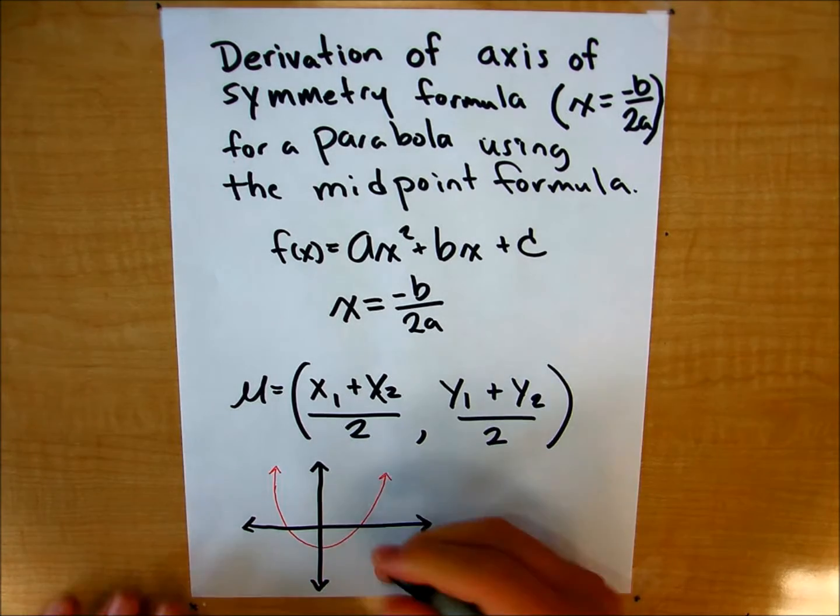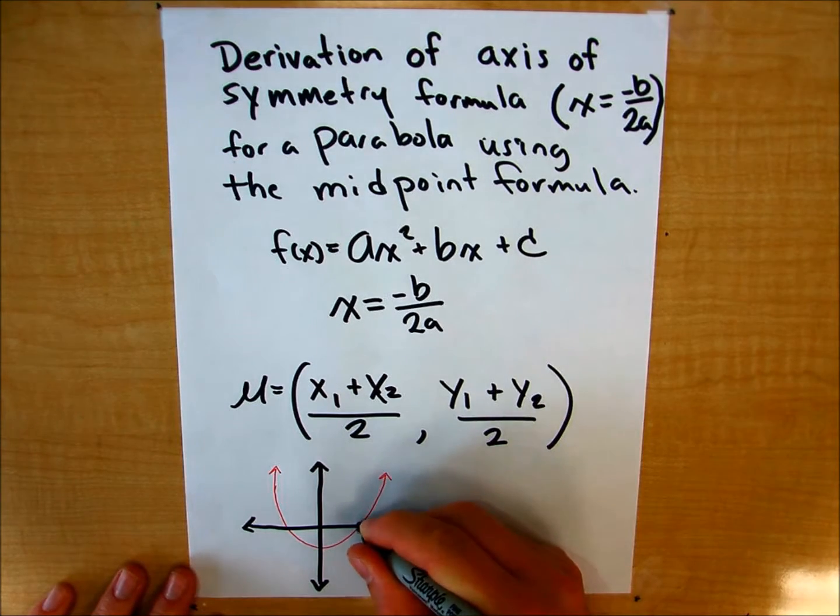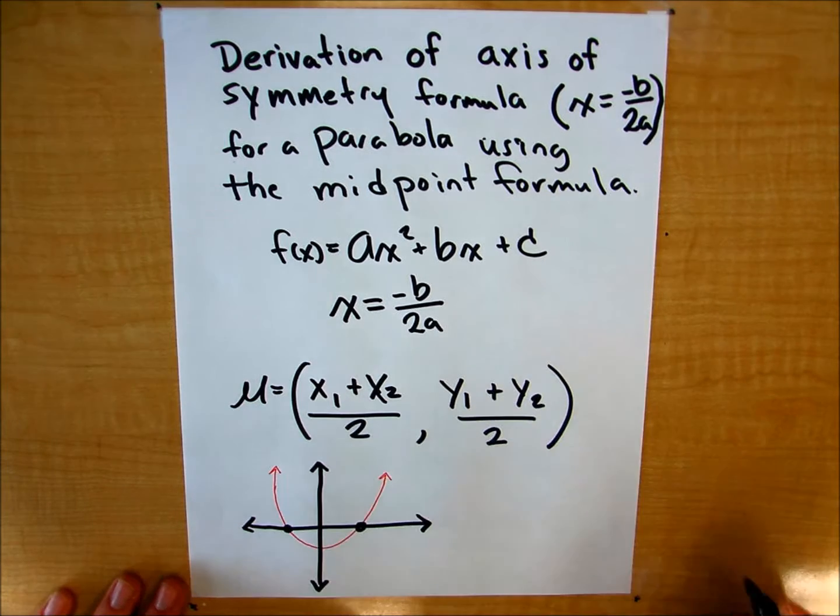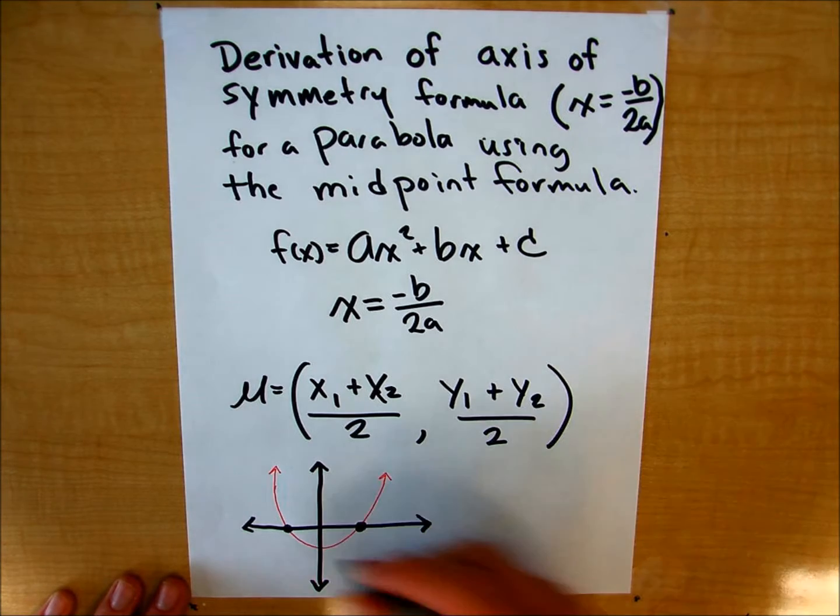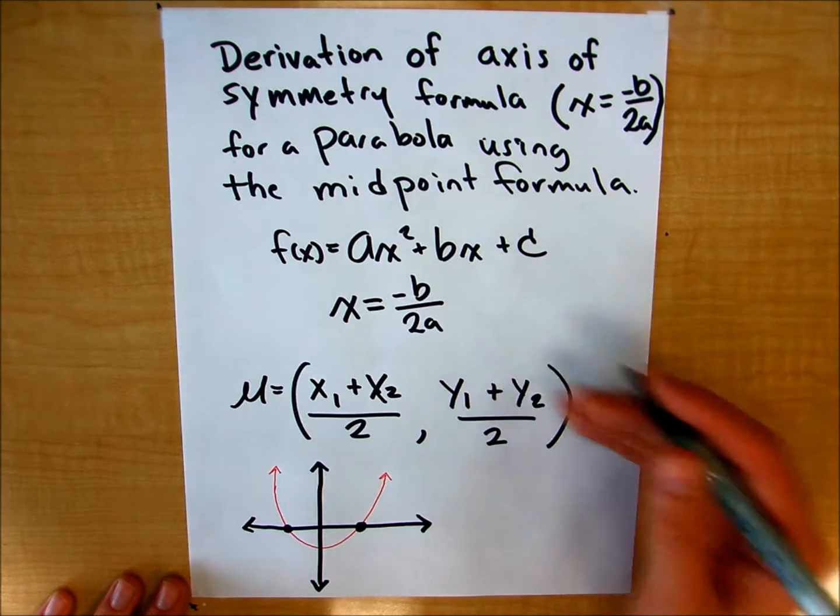I can just kind of think about it, is I want to find what the midpoint of my two zeros would be. So the midpoint of my two zeros, well, I can use the midpoint formula to find that.